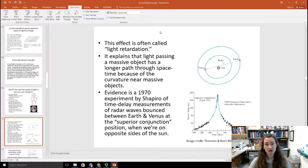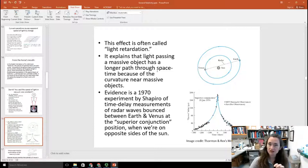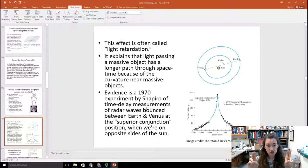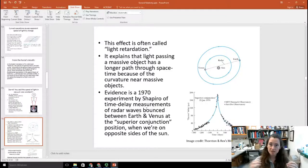Now, this effect is often called light retardation. And it's explained by the idea that light passing a massive object actually has a longer path through space-time because of the curvature of that nearby massive object. So even if it looks like it's traveling straight, it actually has a longer path than you think it does. Now, evidence supporting general relativity and this concept of light retardation came in the form of a 1970 experiment by Shapiro and colleagues of some time delay measurements of radar waves that were bounced between Earth and off Venus and back. And what they did was they measured this at what's called superior conjunction position when we're on exactly opposite sides of the Sun. So what they did was they bounced these radar waves off of Venus and then had them come back and measured how much time it took for the signal to bounce off Venus and come back.